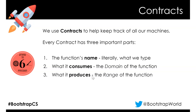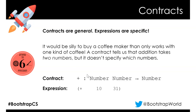Contracts are general; expressions are specific. It would be silly to buy a coffee maker that only works on one kind of coffee - a coffee maker is a general type of machine. A contract tells us that addition takes two numbers but doesn't specify which numbers. We're going to use the term data type, or just 'type,' for these things. The contract for plus has a name, two numbers going in as the domain, and a number coming out as the range.